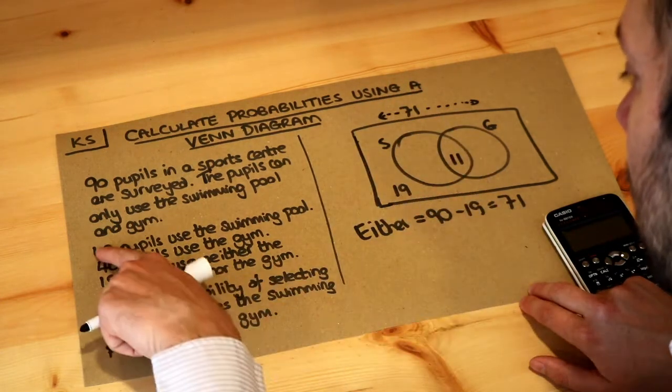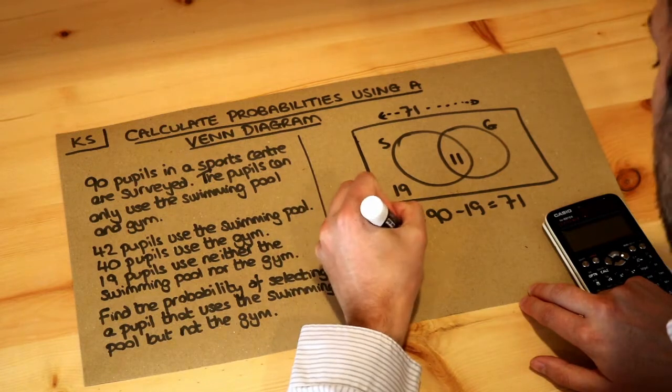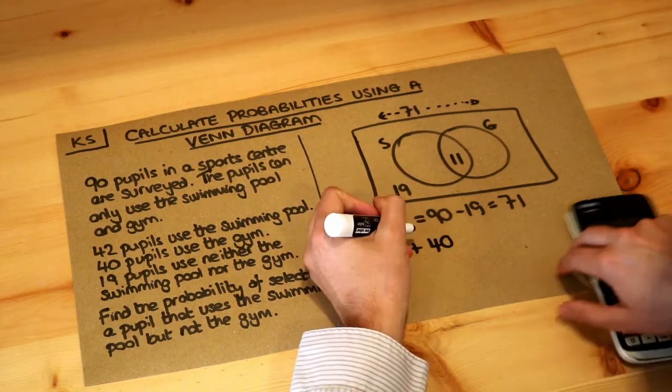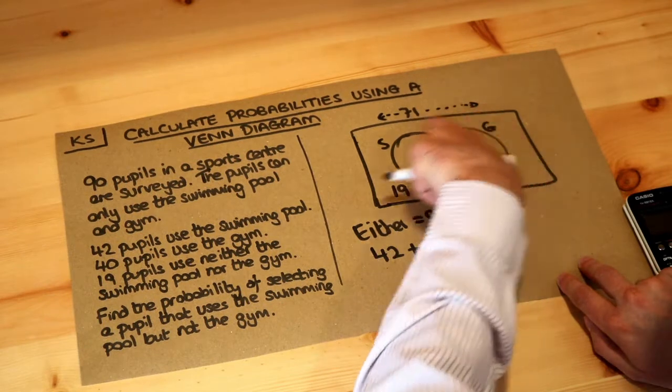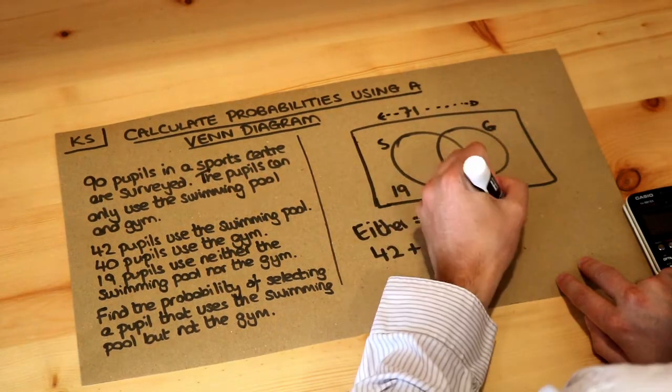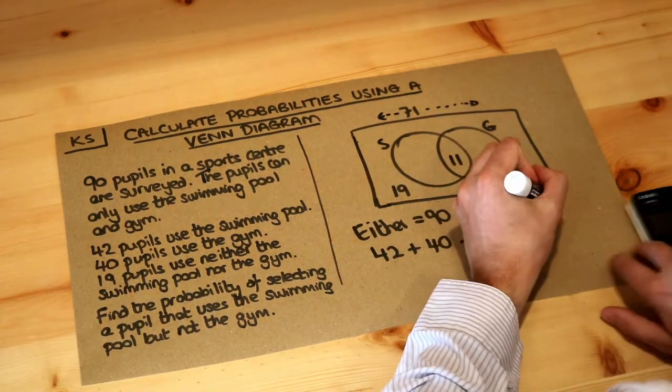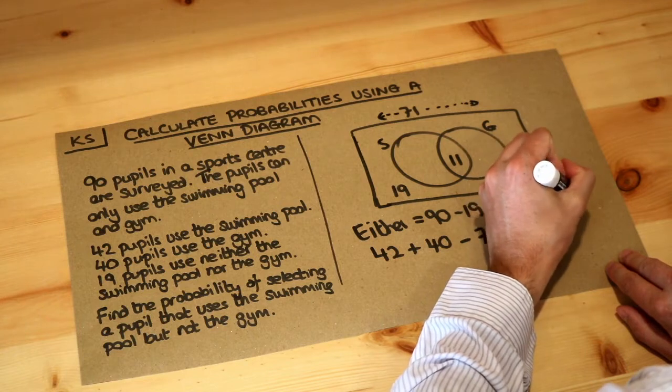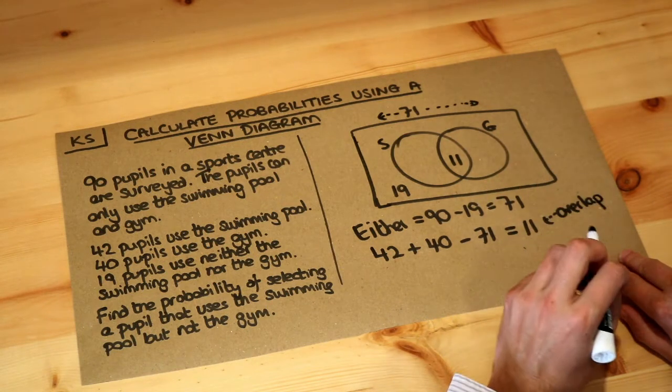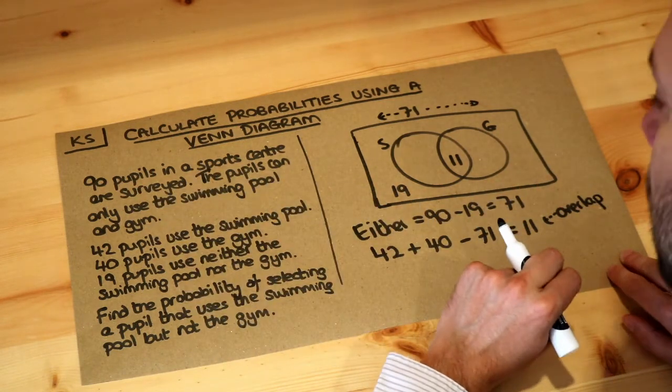So just repeat that calculation. If you do the 42 plus the 40 but you subtract what we know is in either, that gives us 11 and that gives you what's in the overlap of the two. So that's quite an advanced technique here. This is quite a hard question. They're usually a bit easier than this.